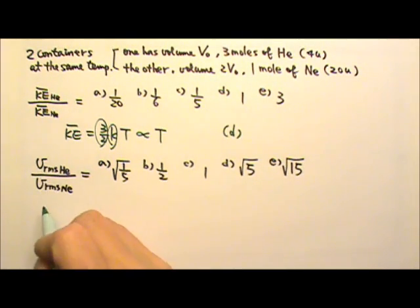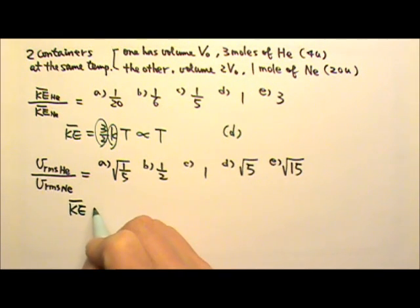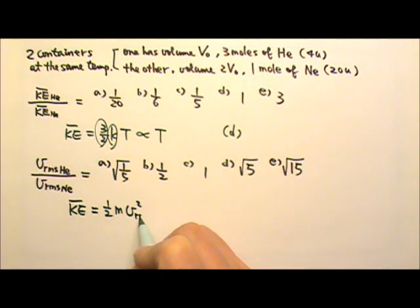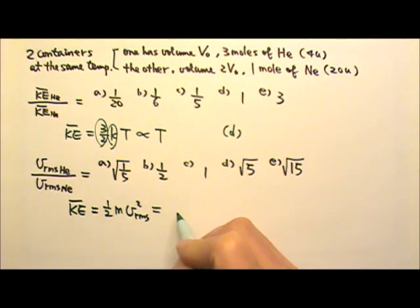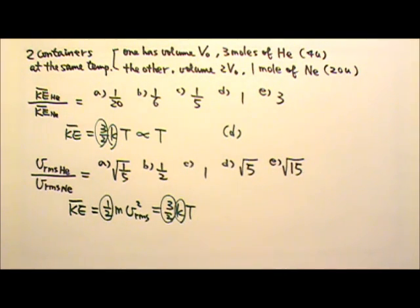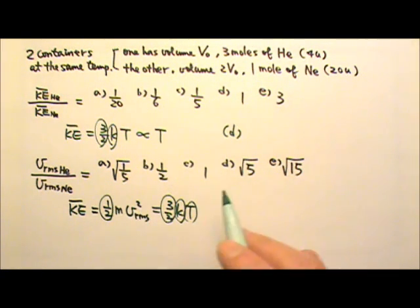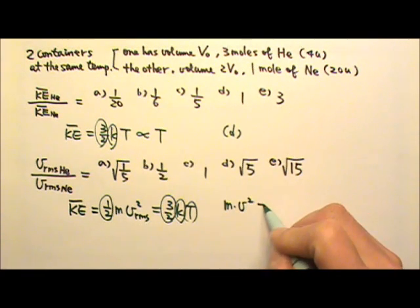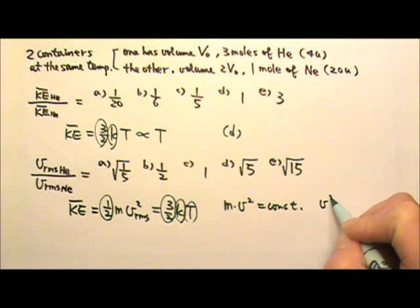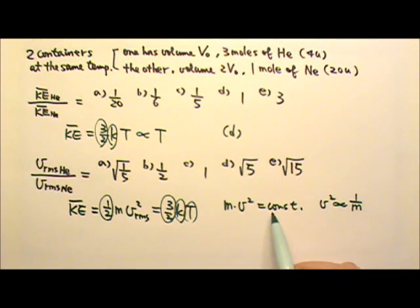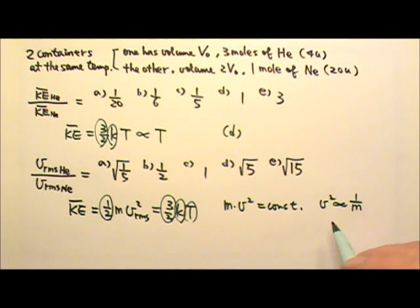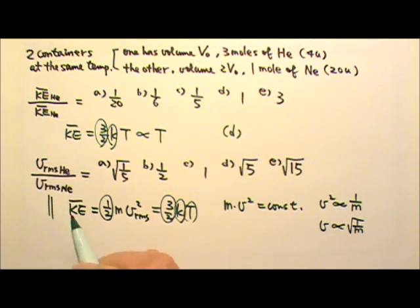For root mean square speed, we use one-half mv squared equals three-halves kT. One-half, three-halves, and k are always constants, and the temperature is also the same. That means m times v squared is constant, so v squared is proportional to one over m. Therefore v is proportional to the square root of one over mass.